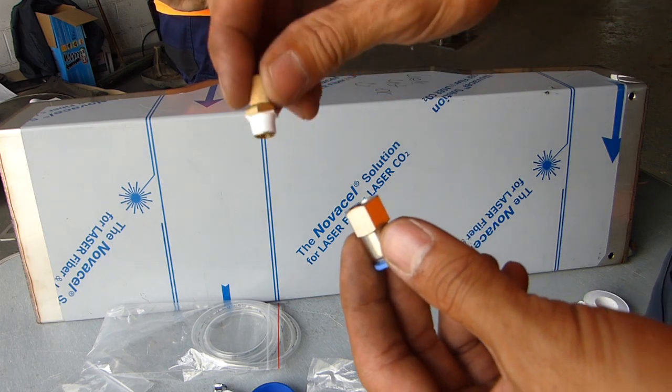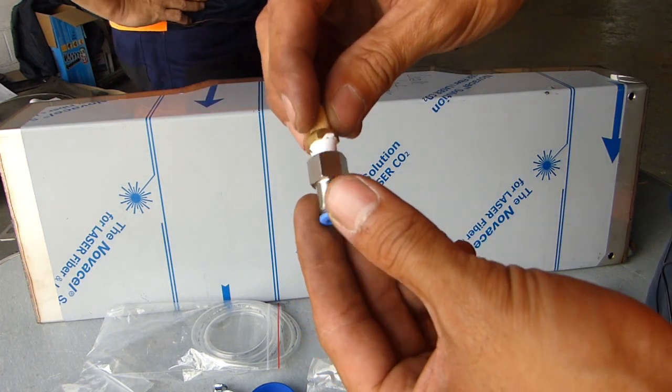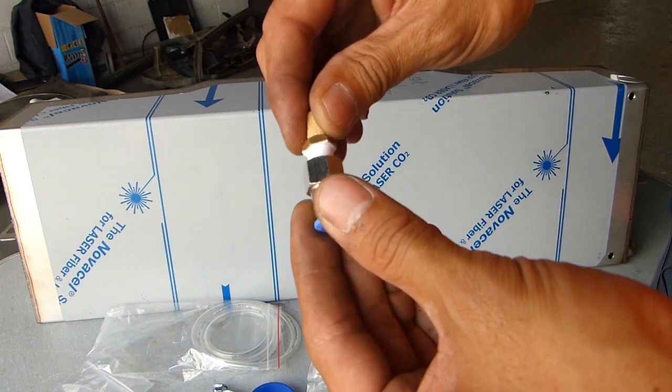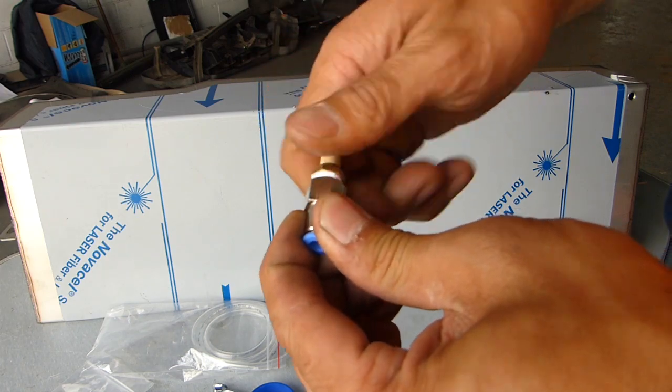You want to attach the breather onto the female attachment. Just with the thread tape, attach it on and tighten it up so it's tight.